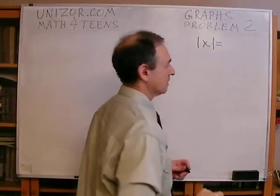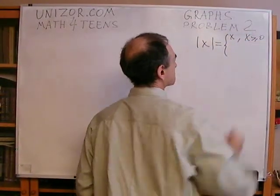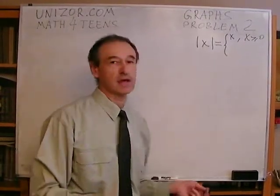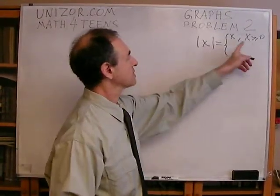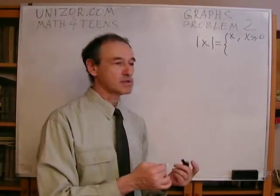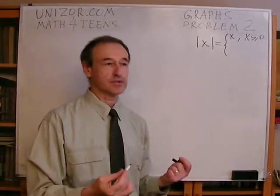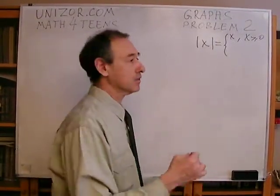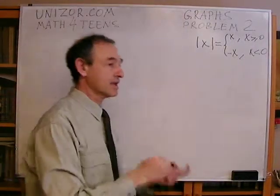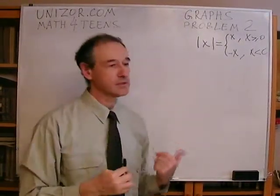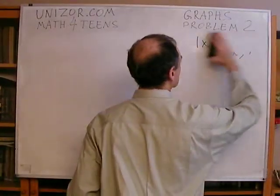Absolute value of x equals x for positive or zero x — that's what they mean by the number without its sign. For negative numbers, say x equals minus 25, we know the absolute value is 25. What is 25 relative to minus 25? That's minus x. So for negative x, absolute value of x is minus x. That's the strict definition of absolute value. Keep it in mind.